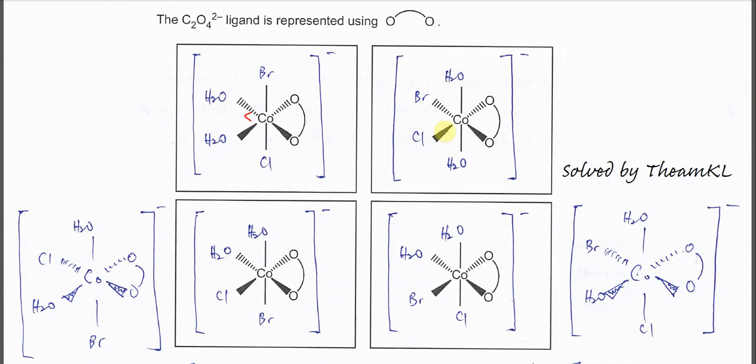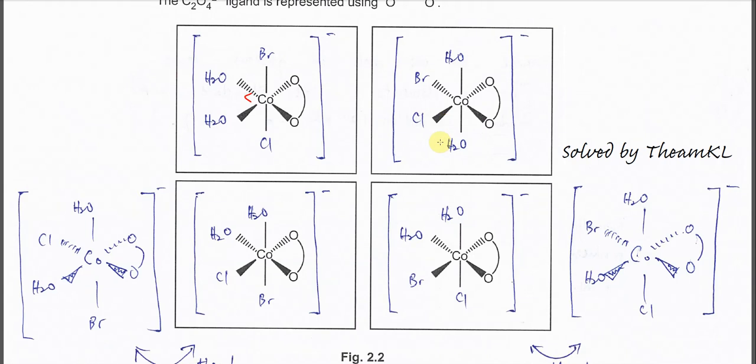Okay, this is how we try to form the stereoisomers. And of course we can form the optical isomers, meaning the stereoisomers that can form the mirror image which is non-superimposable.